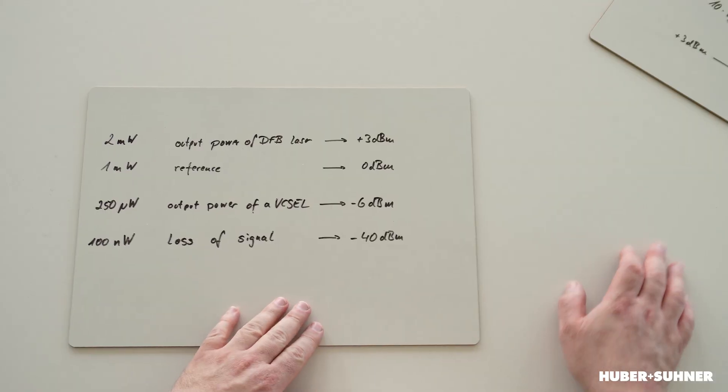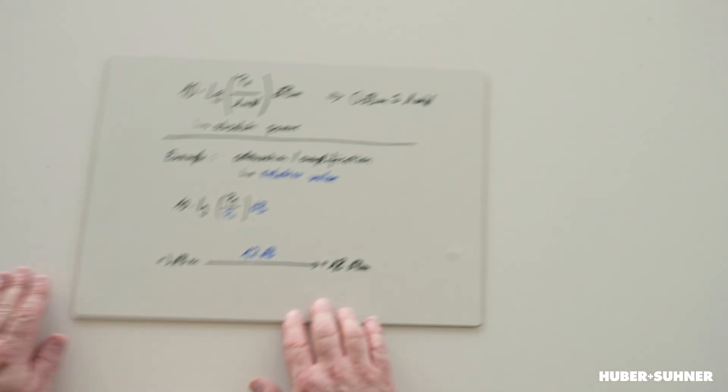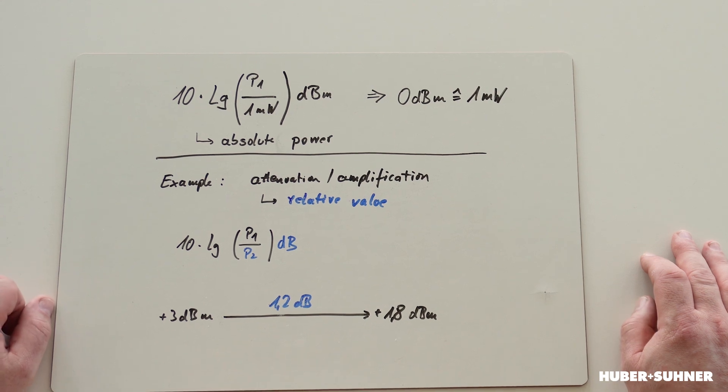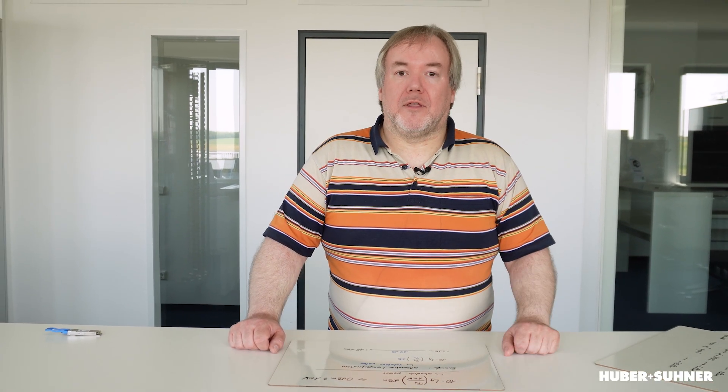Now the question is, what does dBm mean? Please keep in mind, it's dBm — it's a reference to milliwatt. The math is 10 times the logarithm of the ratio between the actual power and 1 milliwatt. 1 milliwatt is the reference, so we use the unit dBm. Per definition, 0 dBm equals 1 milliwatt. And please keep in mind, it's an absolute value for the power.